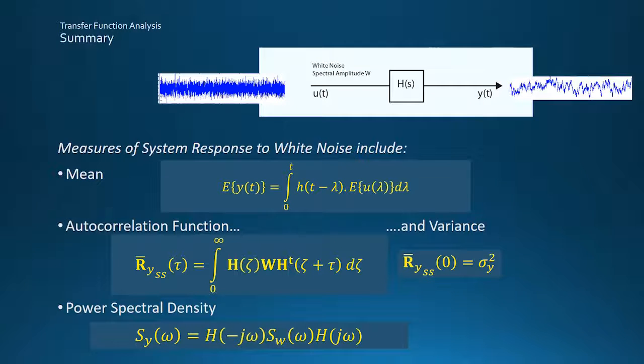So in summary, these are the formulas to find the mean, correlation function, variance, and power spectral density of the system response to a white noise input signal, provided the system is stable and transients have died away to leave stationary output statistics.